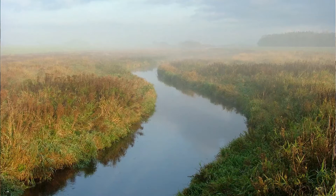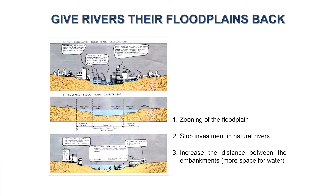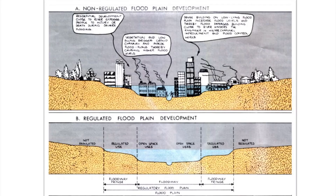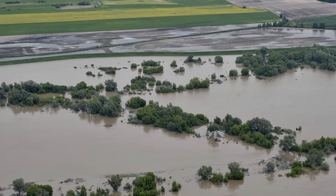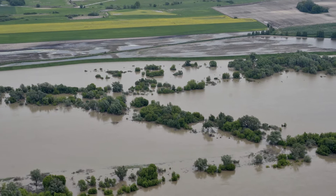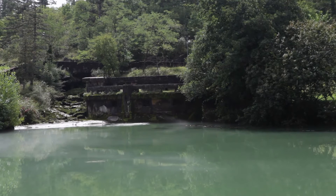Many flood protection embankments make river valleys very narrow. Where possible, it is wise to liquidate embankments or at least increase the distance between them. It was calculated that the natural valley of the lower Biebrza River can retain more than 40 million cubic meters of water. Another way to use existing floodplains is constructed polders which can be flooded during high water in the river.